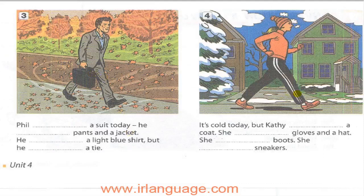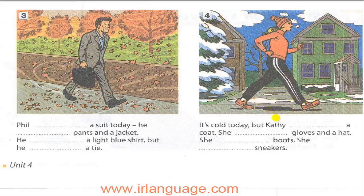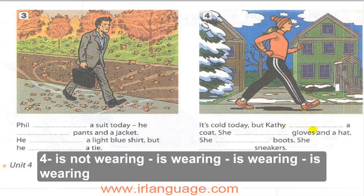Picture number four: what's she doing? She's running, she's doing exercises. It's cold today, but Casey is not wearing a coat. She's wearing gloves and a hat. Is she wearing boots? No, she's not wearing boots — she's wearing sneakers.